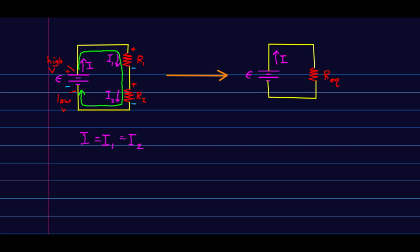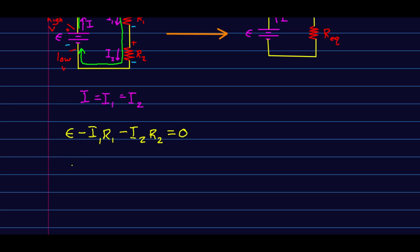So I will now write Kirchhoff's loop law. I go up epsilon as I go through the battery, and then I go down I1R1 as I go through the first resistor, and I go down I2R2 as I go through the second resistor. And there is the total sum of the potential differences around the loop. And I'm going to note that those I's are all the same.